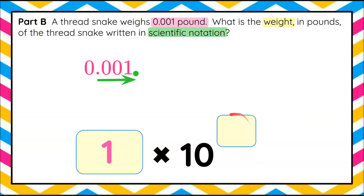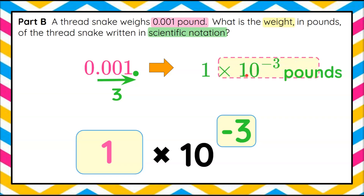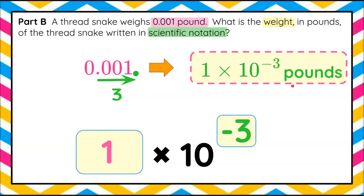Now I want to determine what my exponent is. Because this number was less than 1, moving the decimal to the right represents a negative exponent. We went one, two, three digits to the right, so this is going to be negative three because this value is less than one. So one one-thousandth written in scientific notation is going to be 1 multiplied by 10 to the negative third pounds. Standard form to scientific notation — same numerical value.